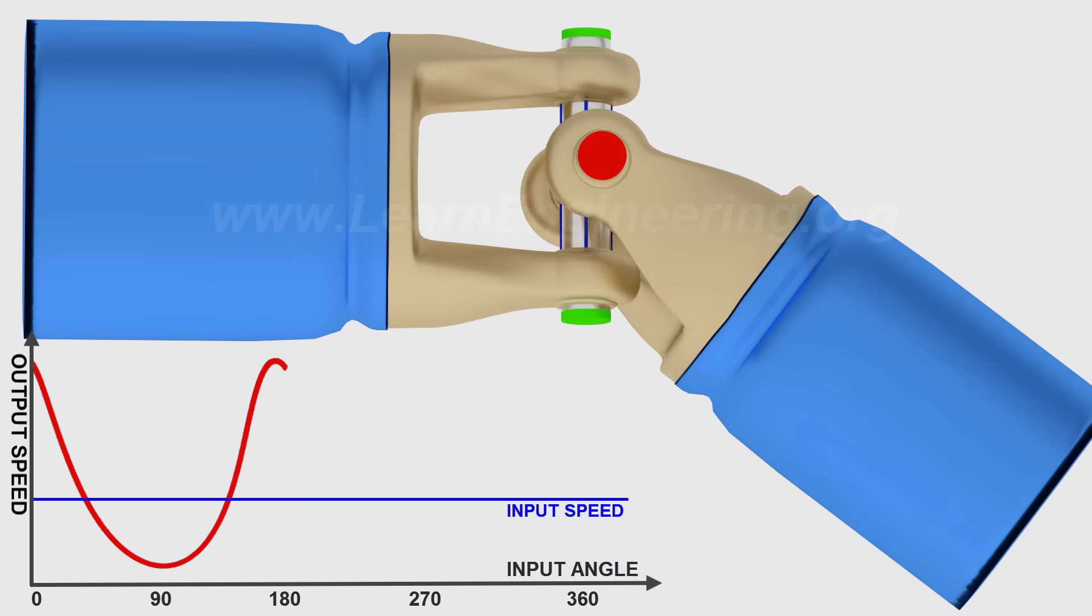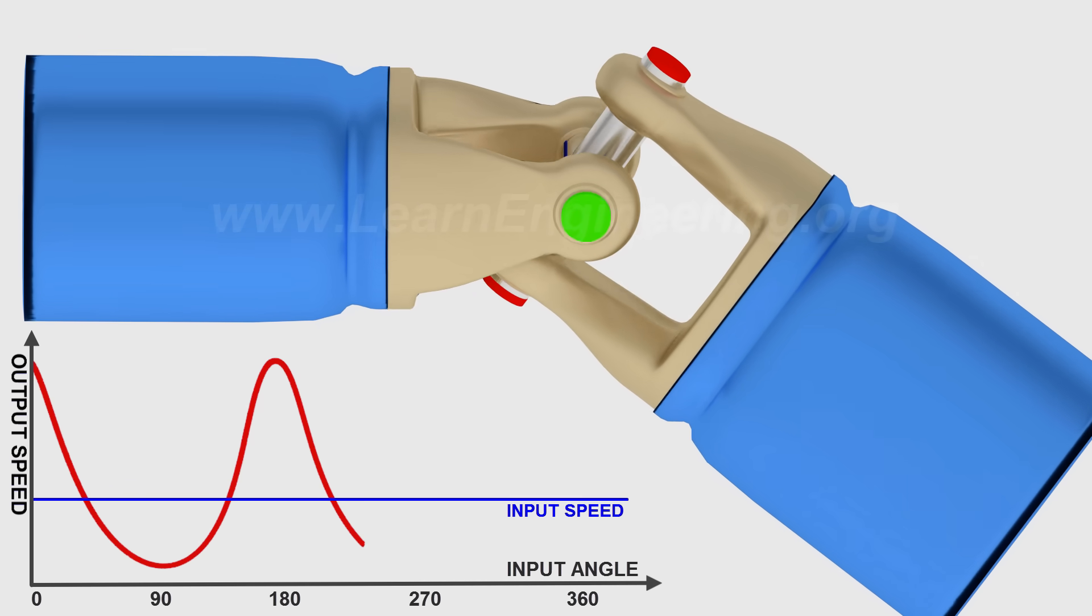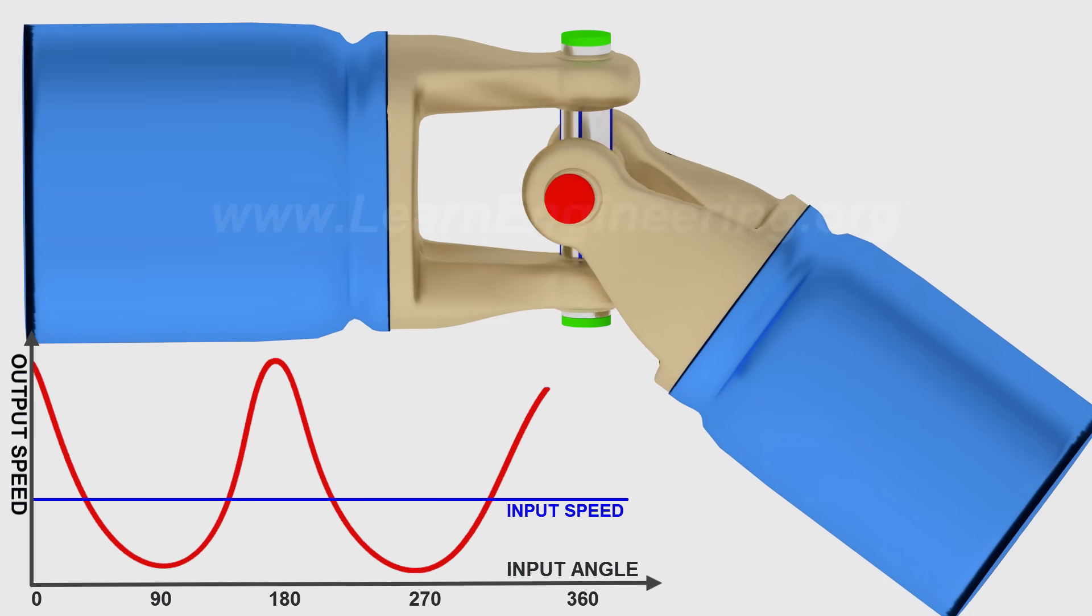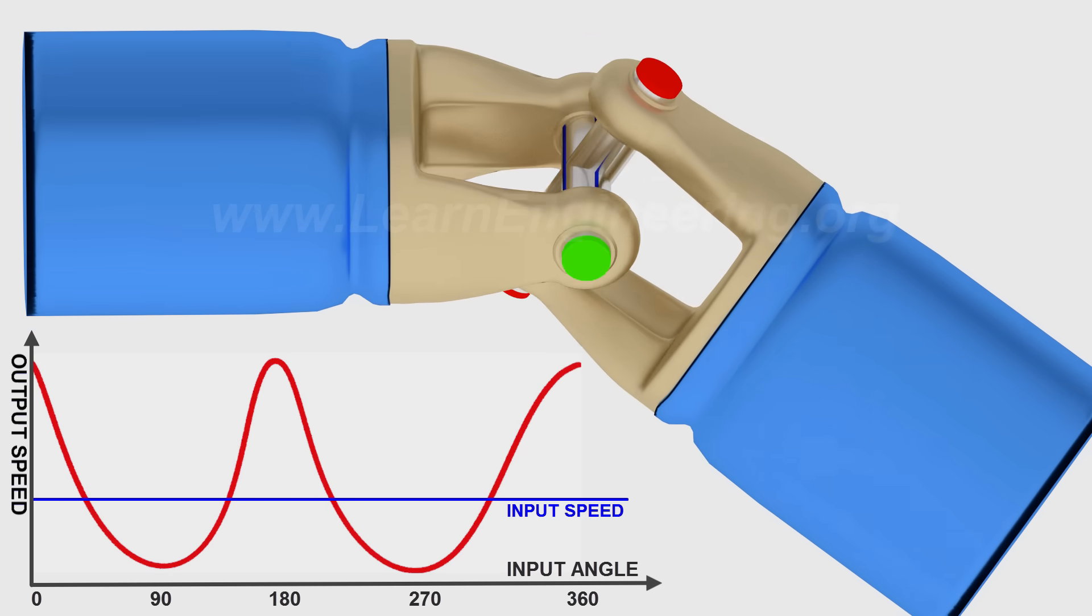This means the universal joint is not a constant velocity joint. This jerky rotation makes the universal joint useless in its original form.